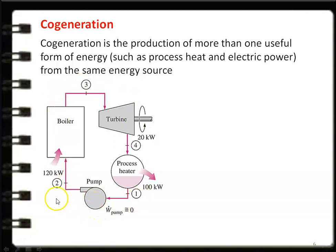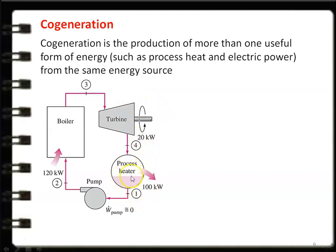For a numerical understanding: assume 120 kW of heat is given in the boiler to convert water into steam. Out of 120 kW, 20 kW is produced as mechanical power, and the remaining 100 kW is used in the process heater for industrial process heating. This is called a simple cogeneration plant.